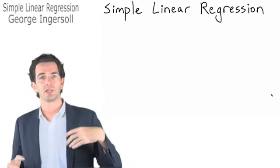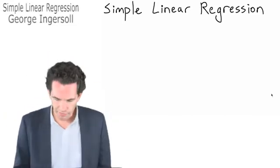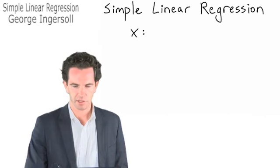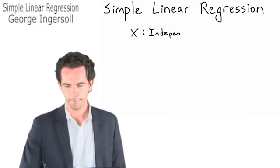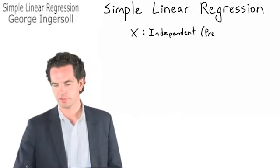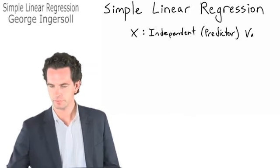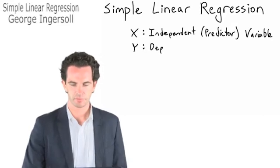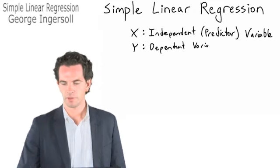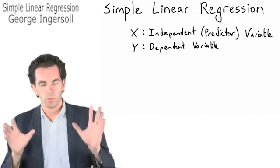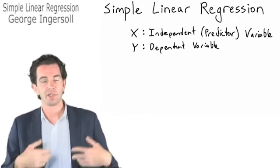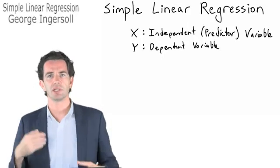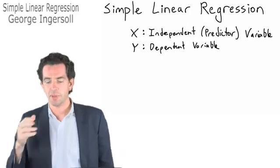It actually gives us a function that allows us to predict one variable from the other. If we have two variables, typically x and y, we'll call x our independent variable and y our dependent variable. We call them independent and dependent because what we want to do is take a value of x and predict a value of y based on it. Our linear regression will allow us to do that. It's not going to be a perfect prediction, but it'll give us an approximate value of y from our value of x based on this relationship.